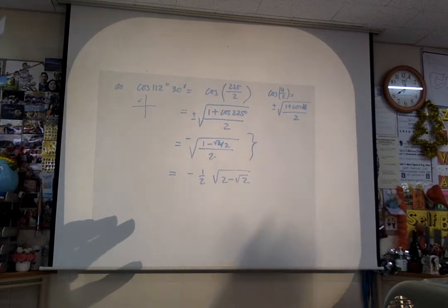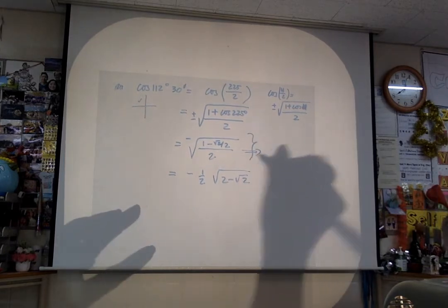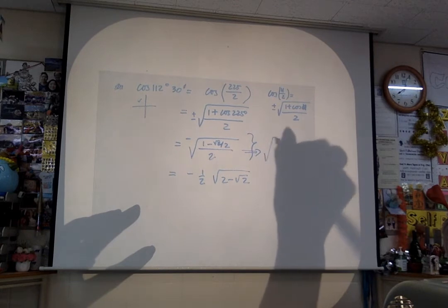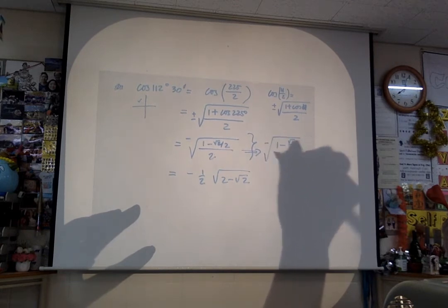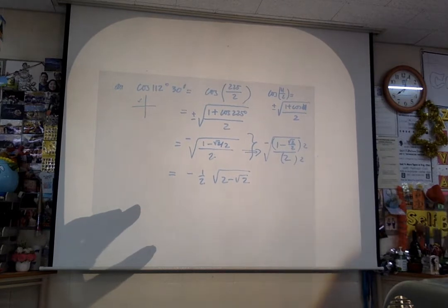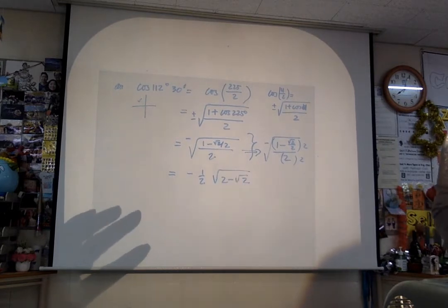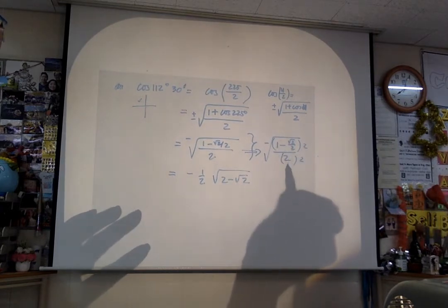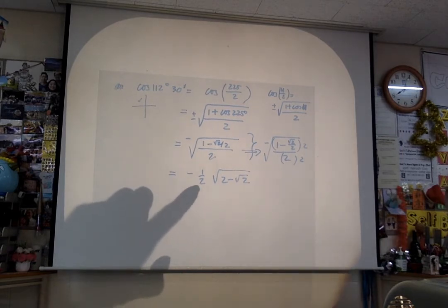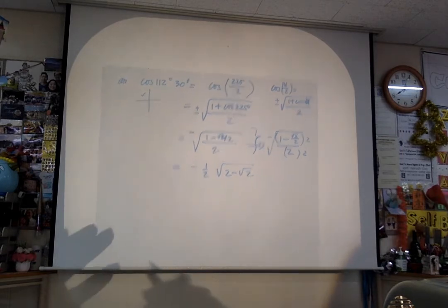Just do the calculation on your own. If you want me to show it: negative times the square root of 1 minus root 2 over 2, all over 2. Multiply everything by 2 to handle the complex fraction, so you get the square root of 2 minus root 2 over 4. The square root of 4 is 2, that's why the 2 came out.